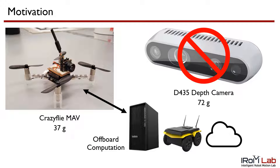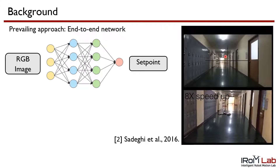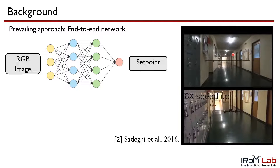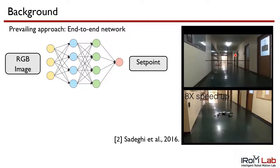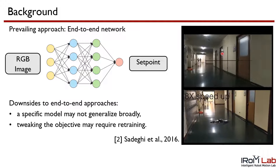Due to its small size, we also assume that the MAV has access to off-board computation, for example through a desktop computer, ground vehicle or the cloud. The prevailing approach for monocular navigation is to use a learned end-to-end model which maps an input image directly to a position or velocity setpoint.